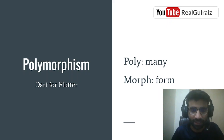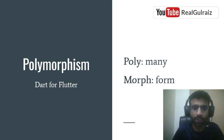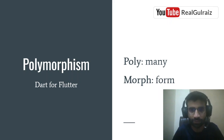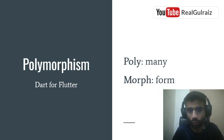Welcome back. This is the last segment of the Object Oriented Programming series. We are talking about polymorphism, which is the fourth pillar of OOP.